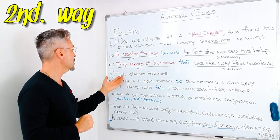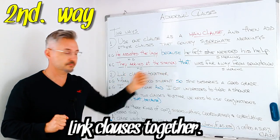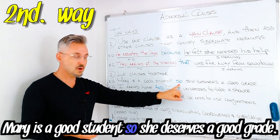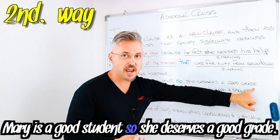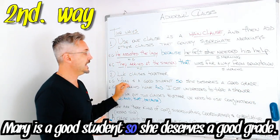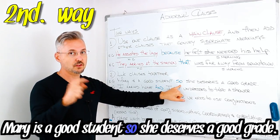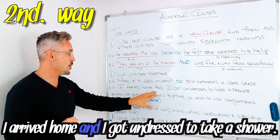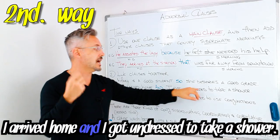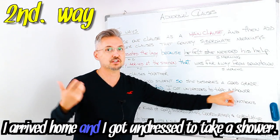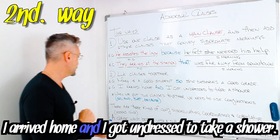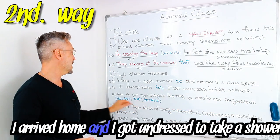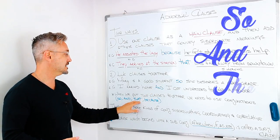Let's take a look at the second usage. We can link clauses together. Example: 'Mary is a good student, so she deserves a good grade.' These are two clauses linked by a conjunction. Another example: 'I arrived home and I got undressed to take a shower' — or 'to have a shower' in British English. When we put two clauses together, we need to use conjunctions like 'so,' 'and,' 'that,' 'because.'